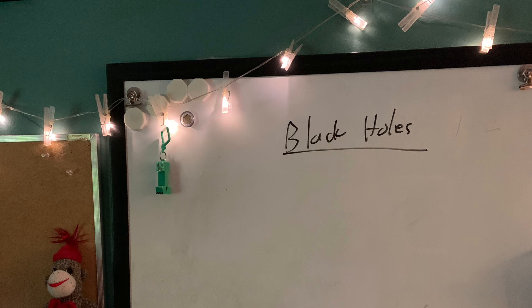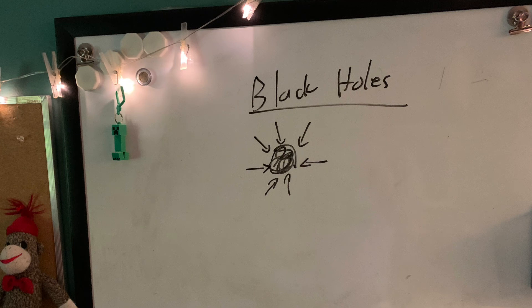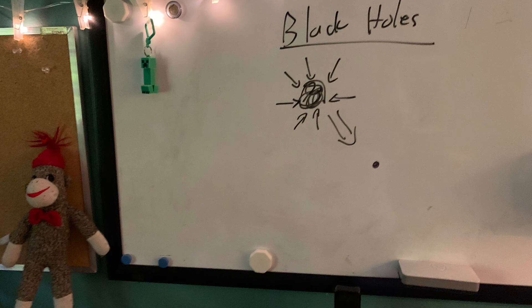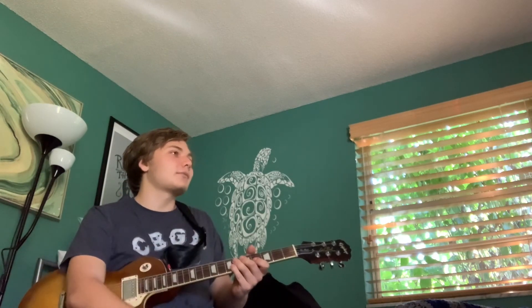Black holes. These bad boys form from stars that have so much gravity after they explode that it overcomes neutron degeneracy pressure, and it collapses into itself. Its gravitational force is so strong that not even light can escape it, hence the name.